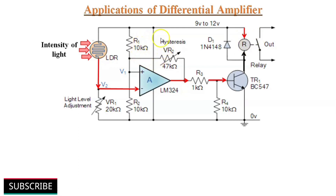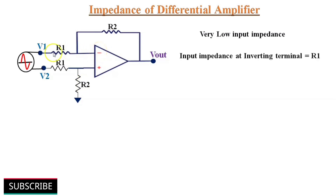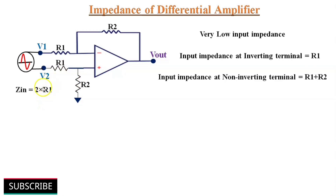This is how a light-activated differential amplifier circuit can turn on an output relay, and the same circuit can detect temperature variation by replacing the LDR with an RTD. One of the major limitations of the differential amplifier is that its input impedance is very low compared to other Op-Amp configurations. The input impedance depends on the values of R1 and R2: at the inverting terminal it equals R1, and at the non-inverting terminal it equals R1 + R2, giving Zin = 2 × R1. Each input source must drive current through this resistance, which has less overall impedance than the Op-Amp input alone.